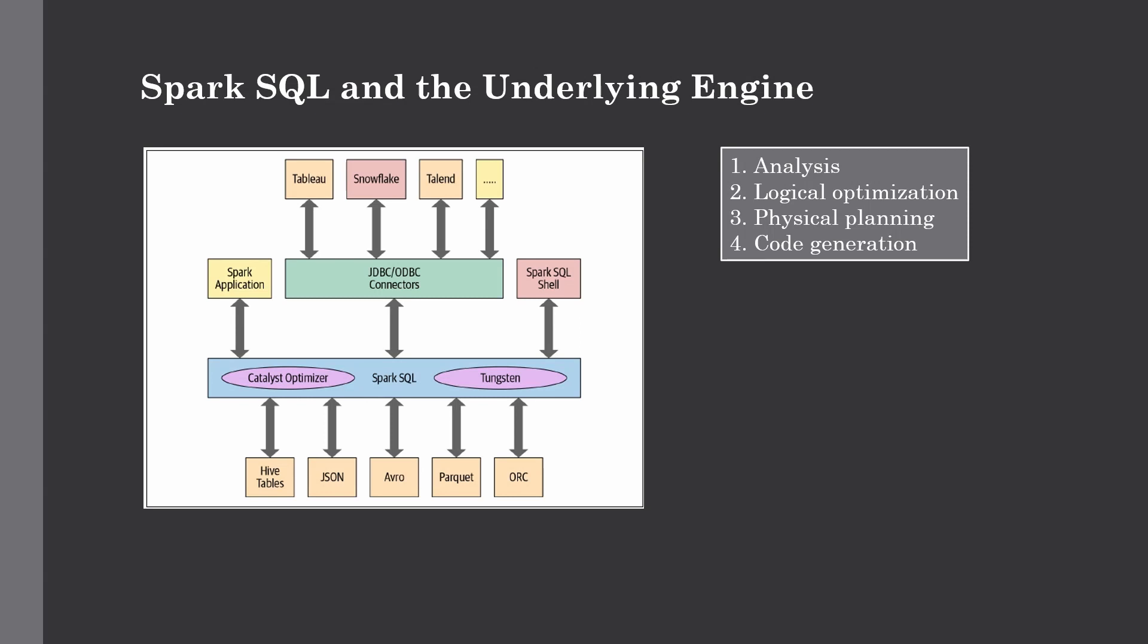The final phase of query optimization involves generating efficient Java bytecode for running on each machine. Because Spark SQL operates on datasets loaded in memory—in RAM—Spark can use great compiler technology for this code generation process for speeding up execution. It acts as a compiler, and Project Tungsten, which facilitates whole stage code generation, plays the main role here. These four phases run behind the scenes of Catalyst optimizer and Project Tungsten to complete your Spark SQL execution in a more efficient manner.